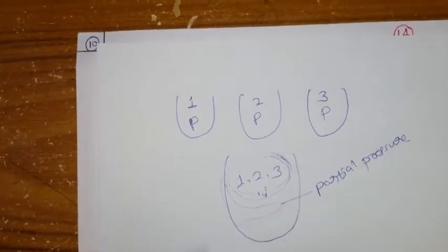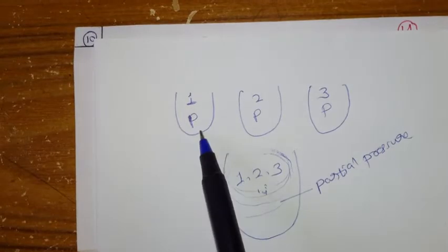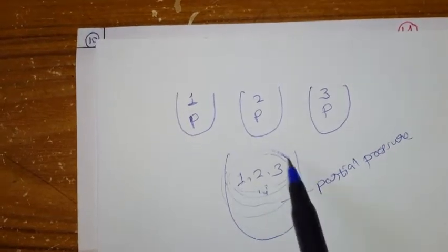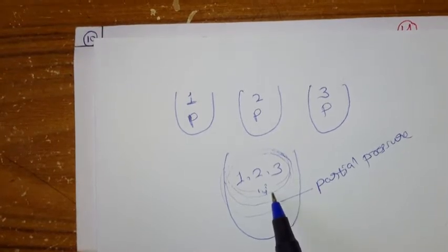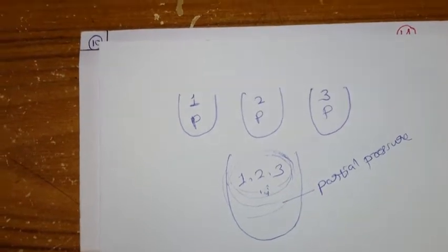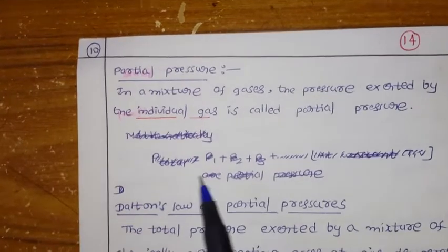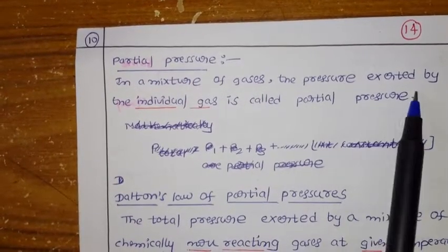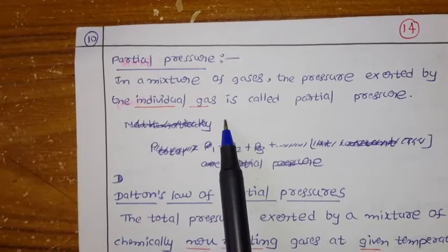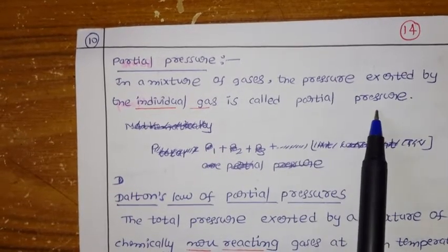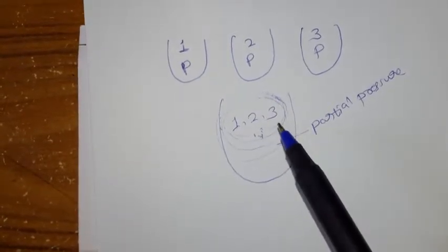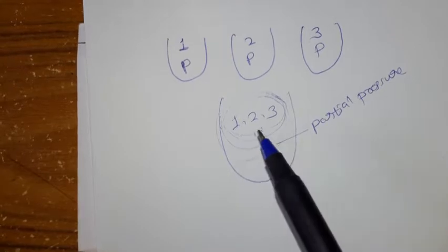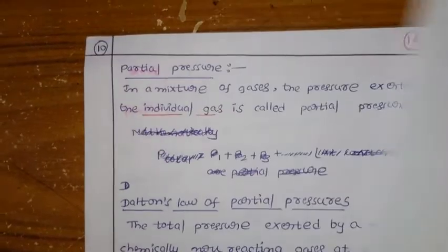You should be very careful here. In the individual vessels they have their own pressure. But if you take all gases together into one mixture — first gas, second gas, third gas — in the mixture, each gas has some pressure, that is called partial pressure. In a mixture of gases, the pressure exerted by the individual gas is called partial pressure.